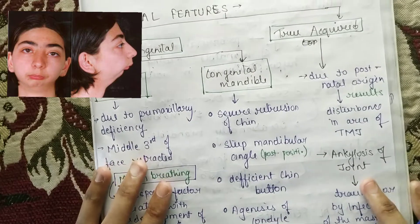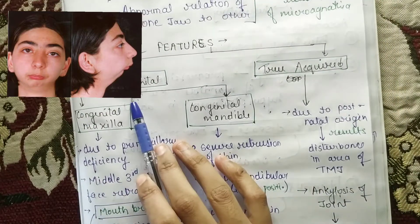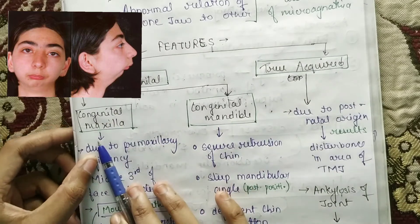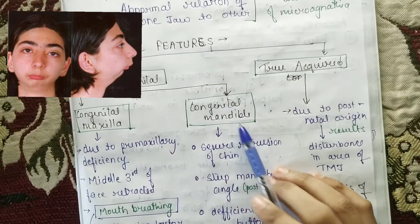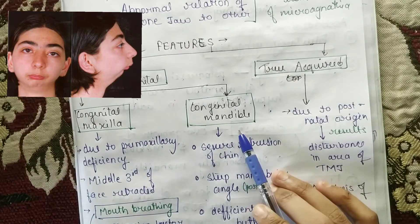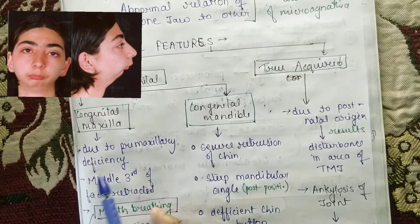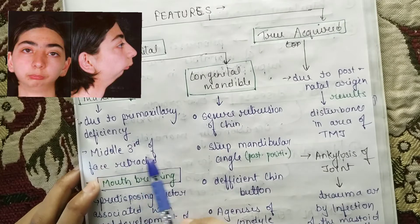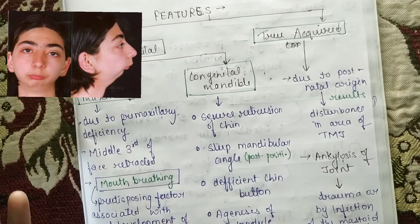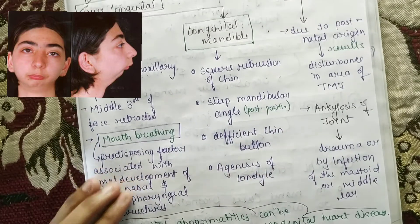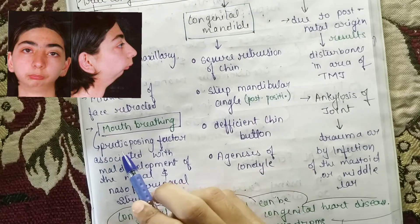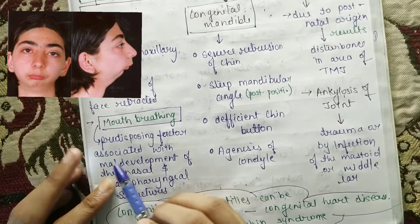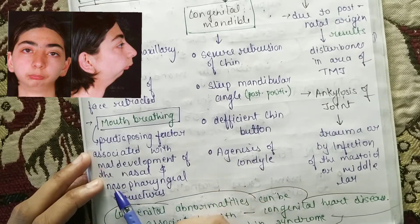Clinical features: there are two types — true congenital and true acquired — for both maxilla and mandible. If we talk about the maxilla, there is premaxillary deficiency. The middle third of the face is retracted, and mouth breathing is the most important predisposing factor for micrognathia.